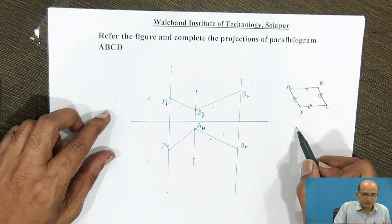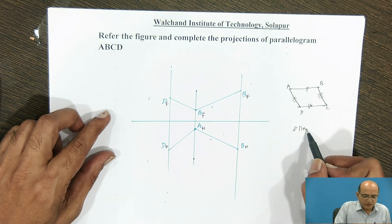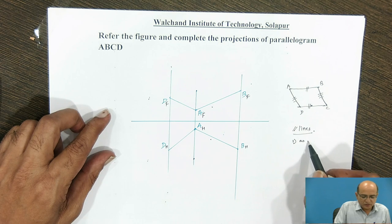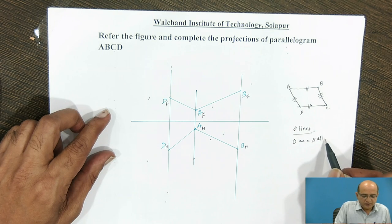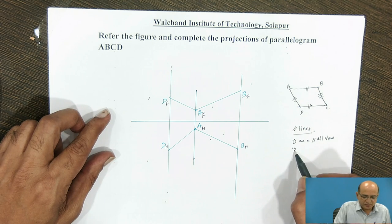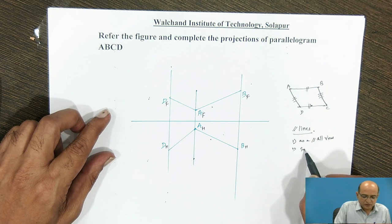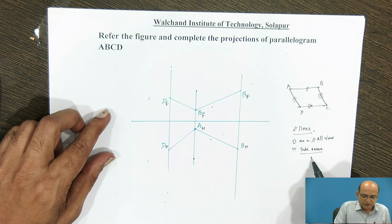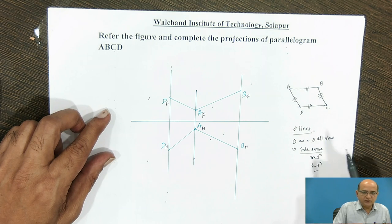In the case of parallel lines, we know that their projections will appear as parallel in all views — whether it is the front view, top view, side view, or any auxiliary view. If the sides are the same length, their projections in the views will be obtained with the same reduction or enlargement adjustment in both figures.